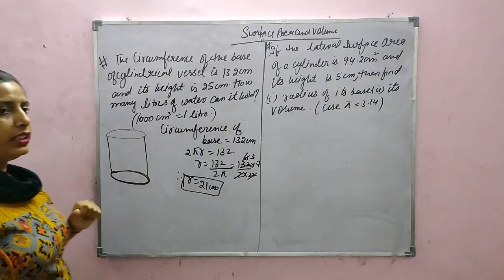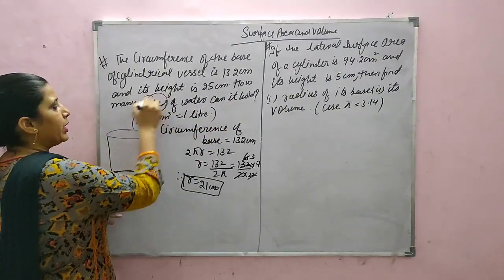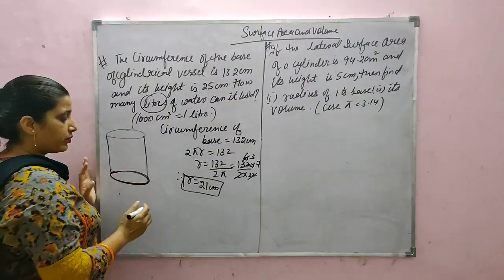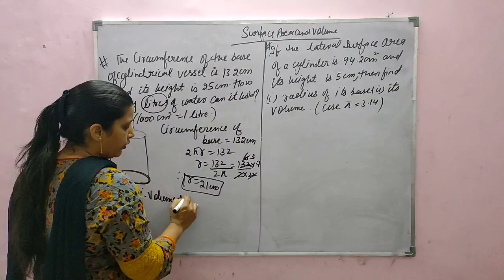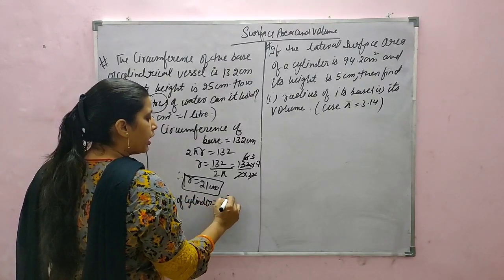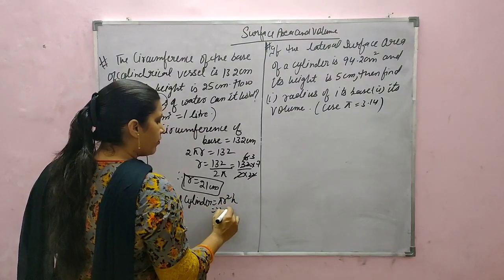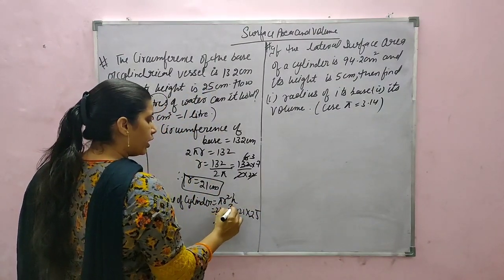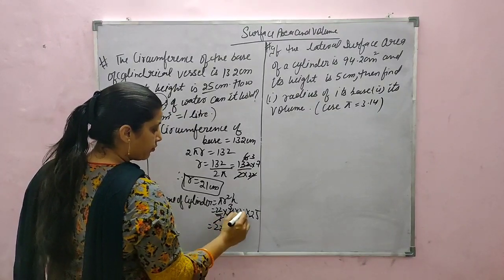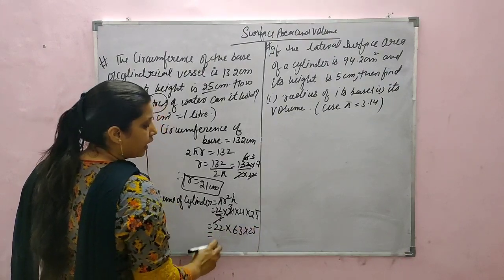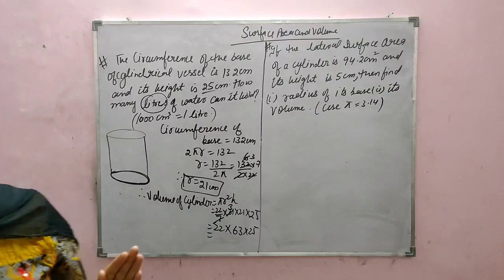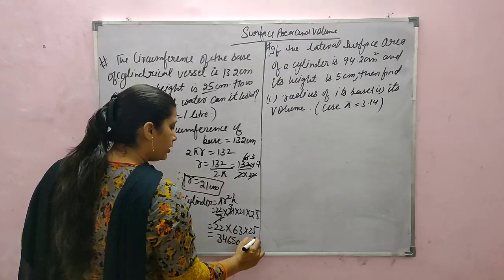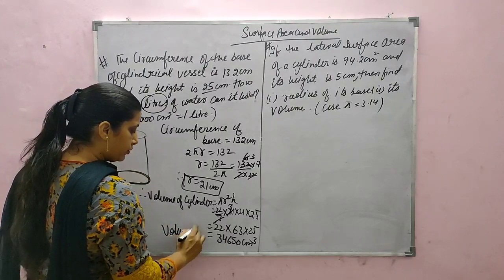Now, how many litres of water can it hold? We have to find out its capacity, and capacity means volume. Volume of cylinder equals pi R square h, which is 22 by 7 into 21 into 21 into 25 (height is 25 cm). This becomes 22 into 63 into 25. Solving, volume equals 34650 cm cube.